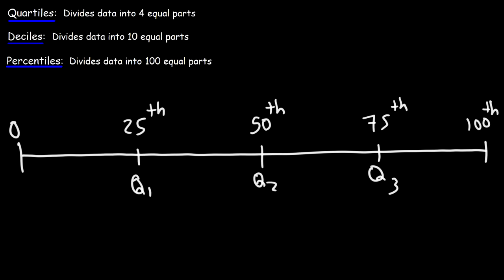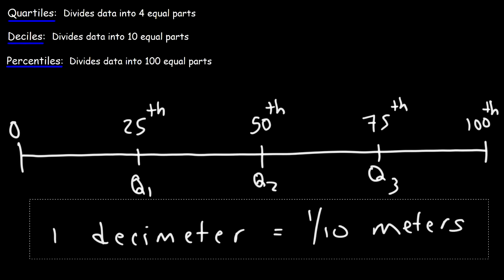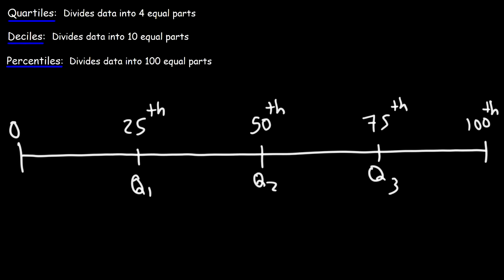Now let's talk about deciles. Deciles divide the data into 10 equal parts. Think of a decimeter — a decimeter is one-tenth of a meter, meaning it takes 10 decimeters to equal one meter. So when you hear the word 'deci,' think of a tenth. A decile is basically one-tenth of the data, so it takes 10 deciles to cover the entire data.